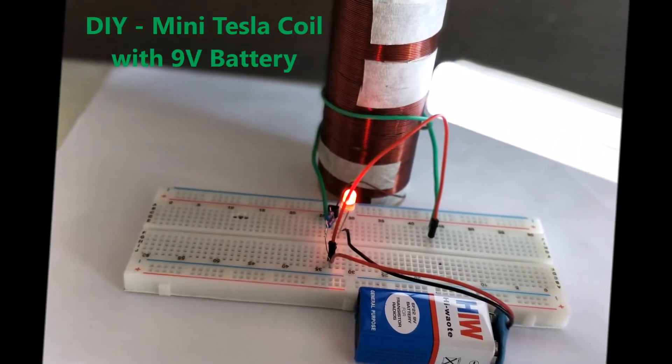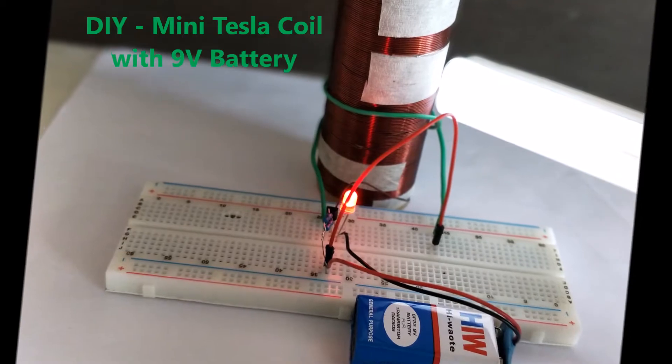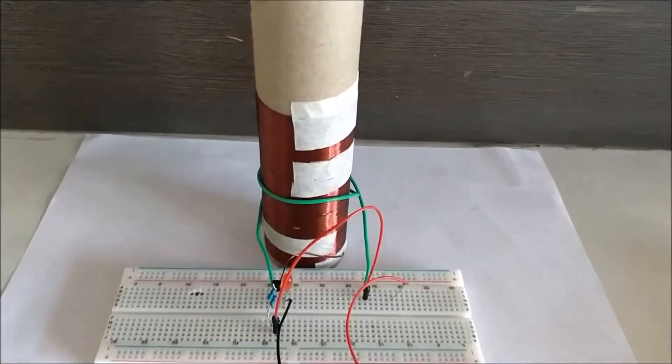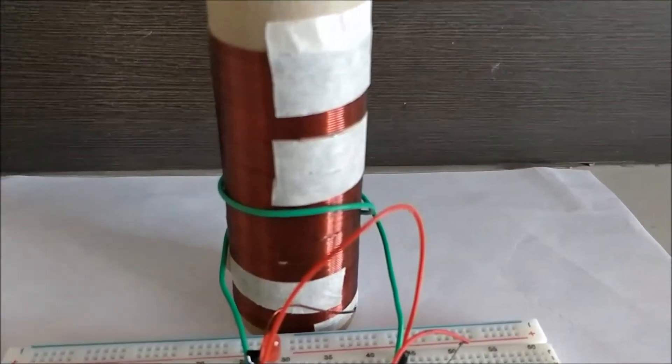Hello guys, in this video we'll see the working of a mini Tesla coil that is powered with a normal 9 volt battery. As you can see, this is the experimental setup. It is very simple, you just have to make sure that you make the secondary coil turns properly.